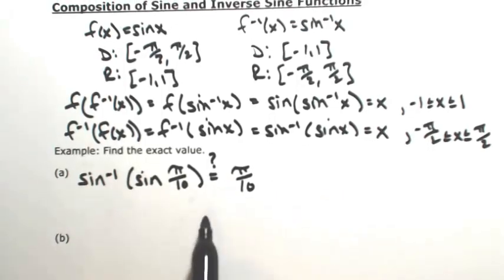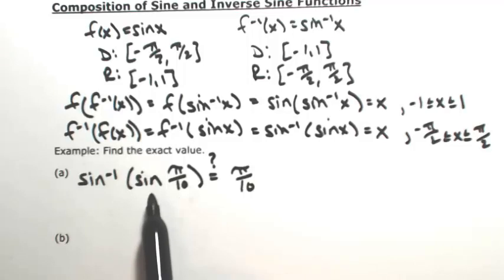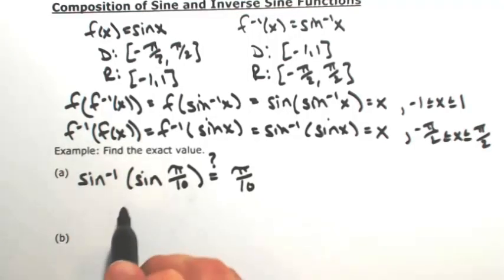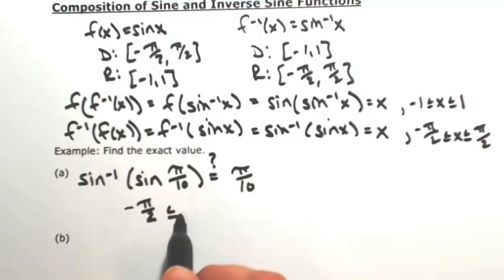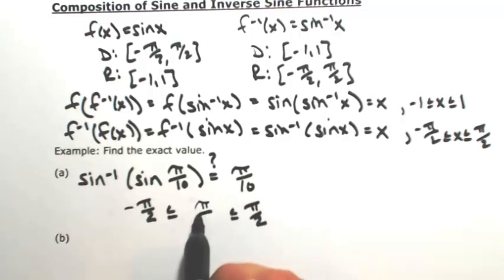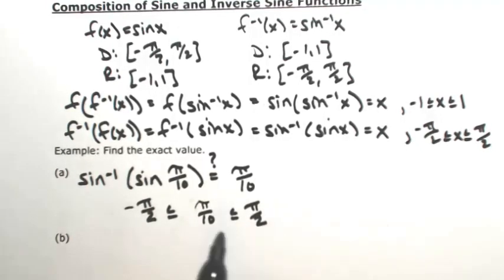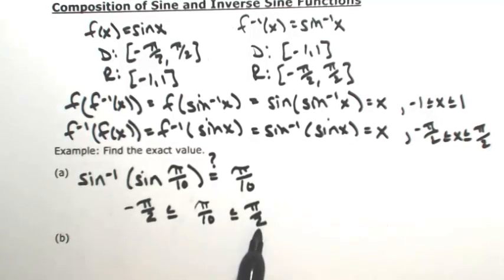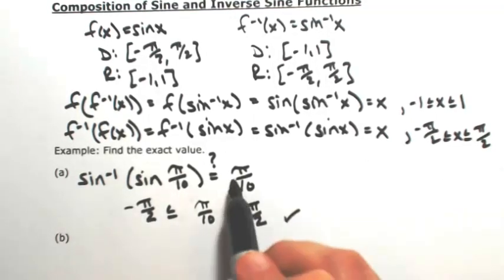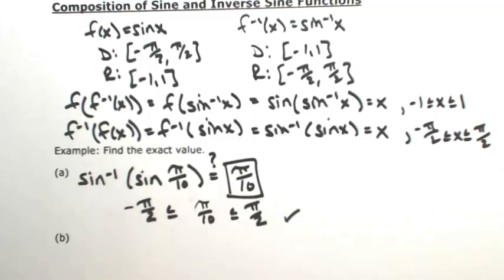This will be true as long as pi over 10 is in the domain of sine. The angle restriction we put on sine is between negative pi over 2 and pi over 2. So as long as pi over 10 is between there, we're ready to go. If you ignore the pi for a second and think of this as 1 tenth being less than 1 half — 1 tenth of pi is in fact less than half of pi. So this is satisfied, and pi over 10 is the correct answer.